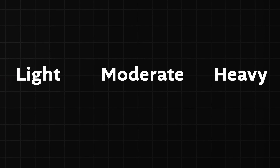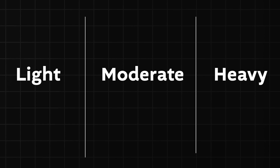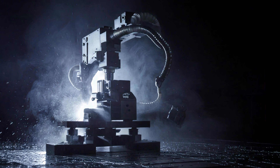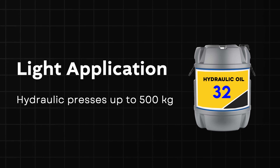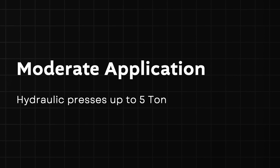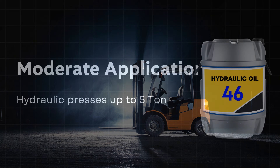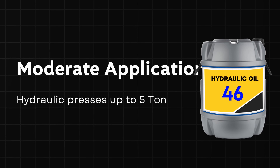Now let's conclude the selection of oil grade based on machine capacity. For lighter applications like a light hydraulic press up to 500 kg (0.5 ton) operating at normal temperature, or a CNC machine, use hydraulic oil 32 for fast and smooth operation. For moderate hydraulic applications like a hydraulic press up to 5 ton or a 4-cylinder clip, use hydraulic oil 46 for balanced performance.